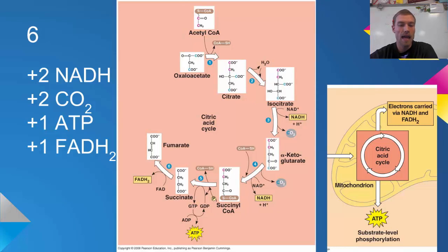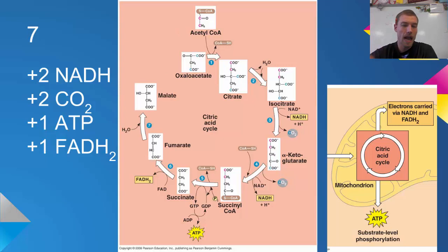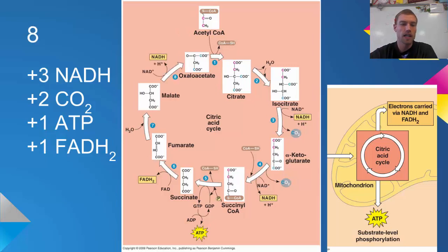We're going to add an FADH2, which is another one of our electron carriers. We're going to add some water and then finally make another NADH. All of these things are being produced from a single acetyl-CoA, which is coming from a single pyruvate.